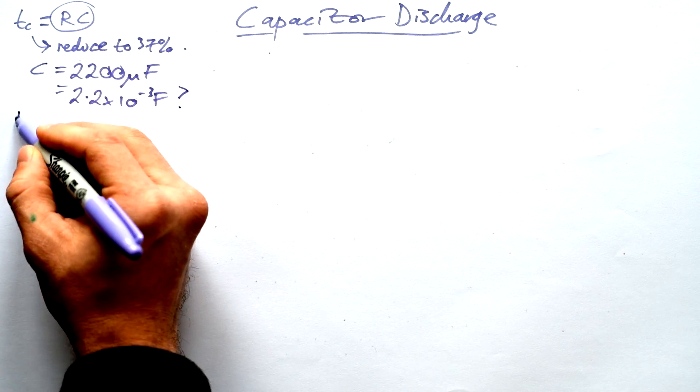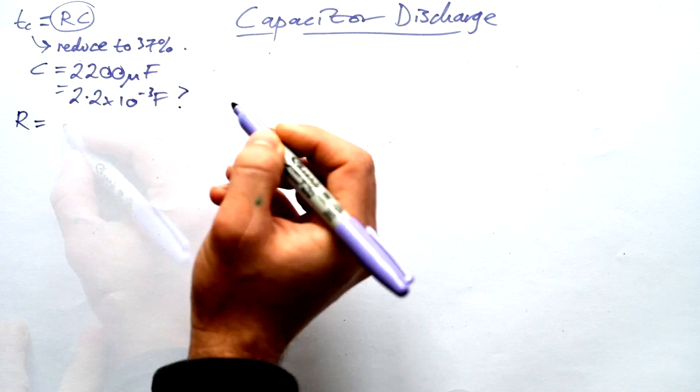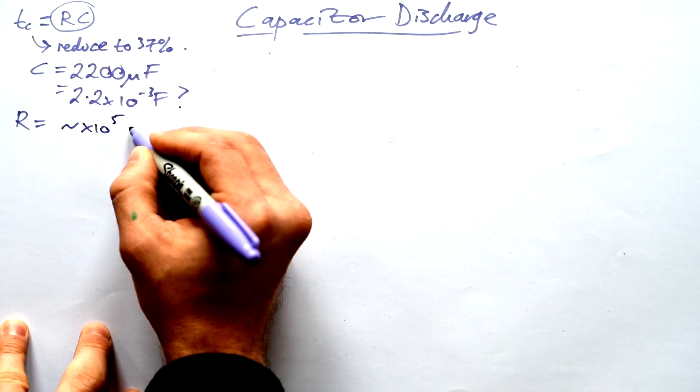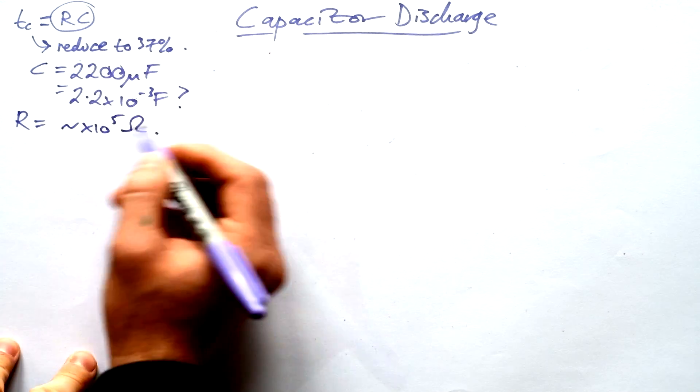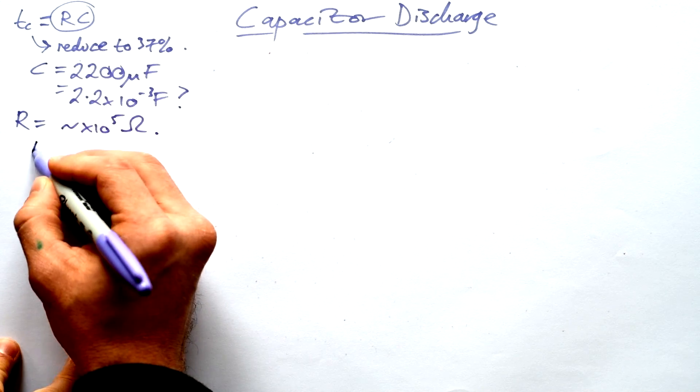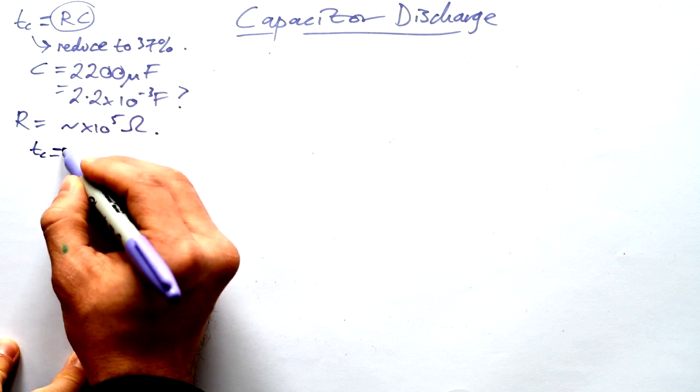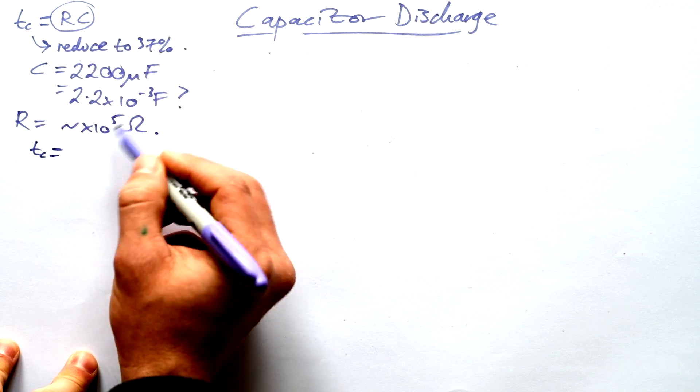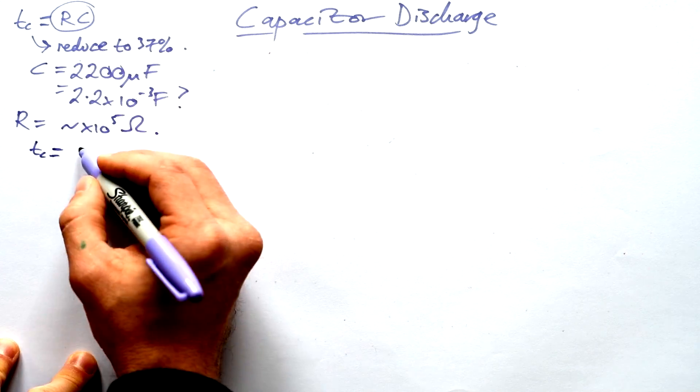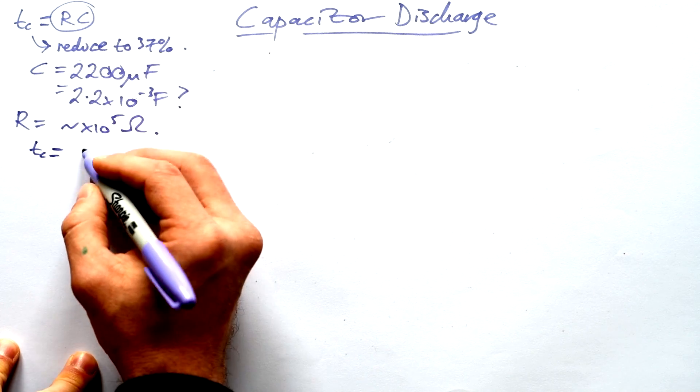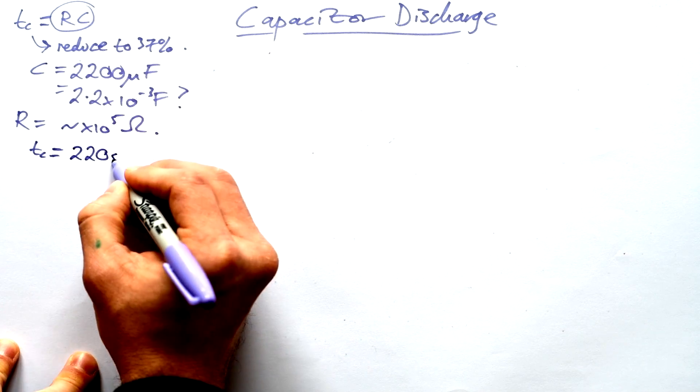So if you have this capacitance, then we want a resistor of the order times 10 to the 5 ohms. If that's the case, if it's 1 times 10 to the 5, then in our case, the time constant will be 2.2 times 10 to the minus 3 times 10 to the 5. And so that ends up just being 2.2 times 10 to the 2, or 220 seconds.